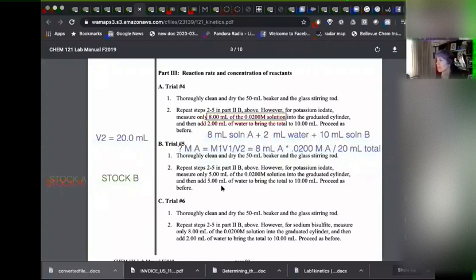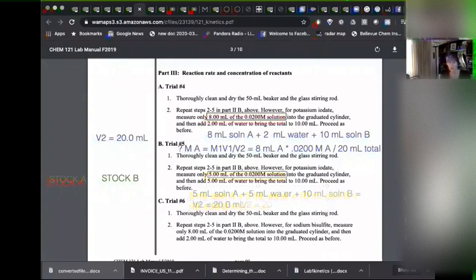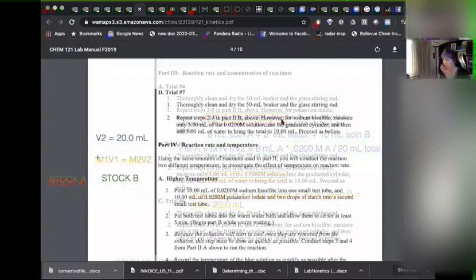Now in the next step, we're going to take five milliliters. So that's five milliliters of solution A plus five milliliters of water plus 10 milliliters of solution B. So again, V2 equals what? So this is set up to make 20 milliliters every single time for every trial. So we're changing the concentration of the reactants and looking at how that affects the speed of reaction. So we're going to be using the dilution equation again and again.